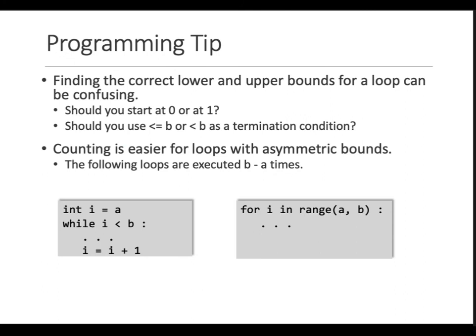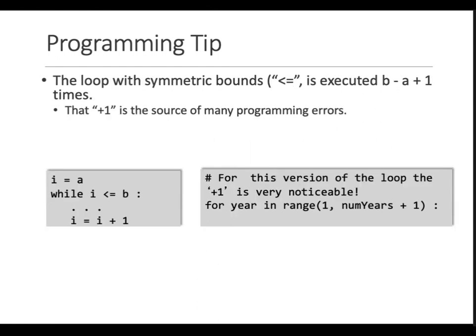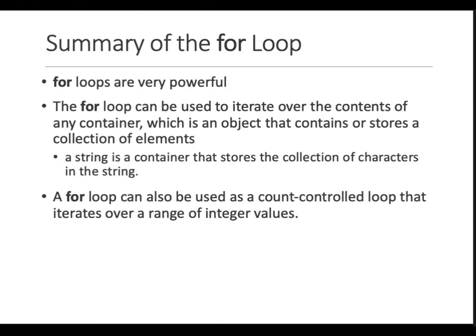Programming tip for for loops is that make sure that your upper and lower bounds, even in while and in for, are the ones that you want, and you are not doing an off-by-one kind of error. And that is essentially the for loop.